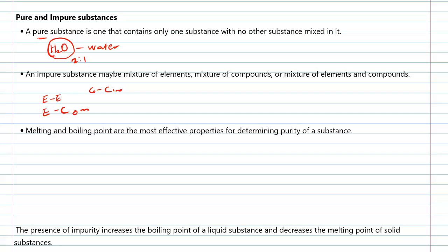Melting and boiling points are the most effective properties for determining purity of a substance. The boiling point of water is 100 degrees centigrade. The presence of impurity will alter this figure. The presence of impurity increases the boiling point of liquid and decreases the melting point of solid. As such, melting and boiling points are the most effective ways of determining if a substance is pure or not.